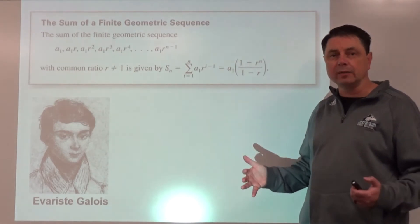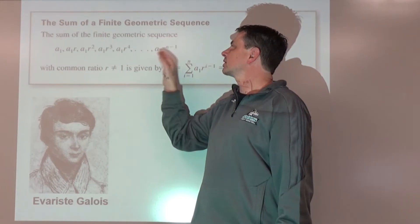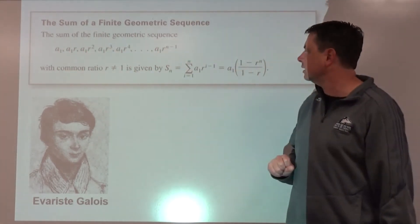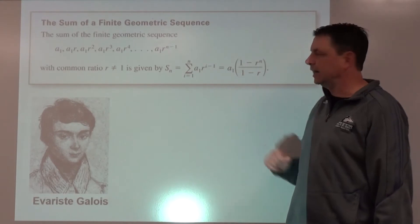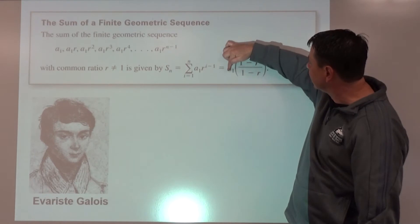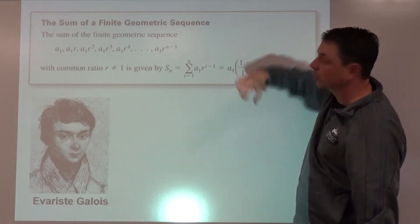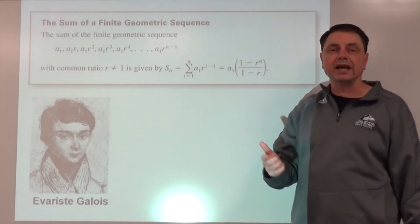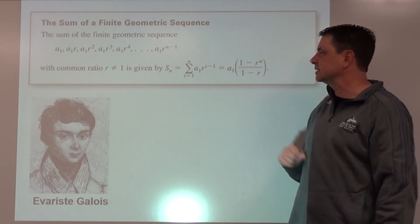For the partial sum of a finite geometric sequence — adding up the first n terms — the formula is a-sub-1 times one minus r to the n, divided by one minus r. I like to keep a-sub-1 on top with parentheses around the rest. Parentheses on the bottom are especially important when using a calculator to divide by that quantity.